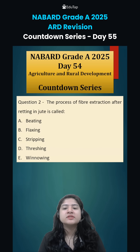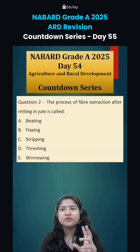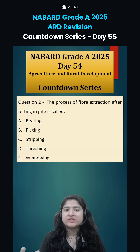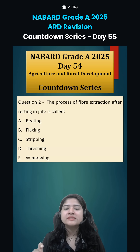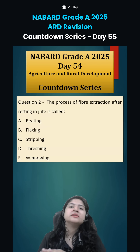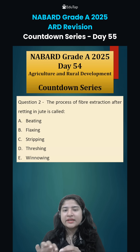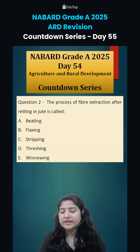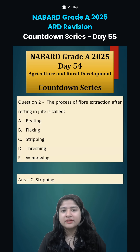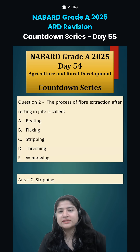Coming to question number two: the process of fiber extraction after retting in jute is known as? From jute, fiber is made. There are two significant processes that happen. First is known as retting — the jute is kept in water so that the fibers can segregate from each other. The second process is stripping, where fibers are stripped and then hung for extraction.